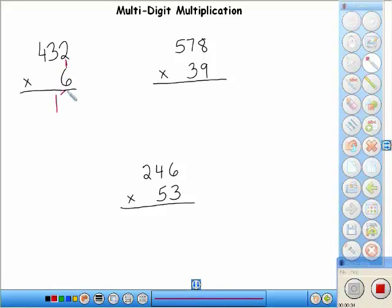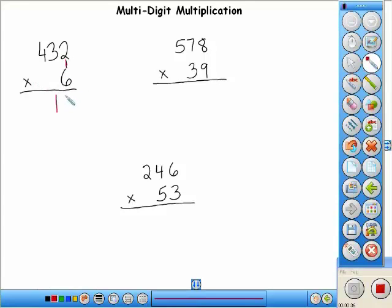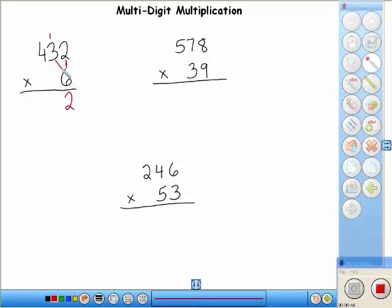And we're not going to write 12 here because we can't write two digits. What we have to do is we're going to write the 2 and carry the 1. Next step is we're going to take the 6 and we're going to multiply it by the 3 there. 6 times 3 is 18 plus the 1 we carried is 19. And remember, I'm going to write the 1's place, the 9 for 19, and I'm going to carry the 1 over here.